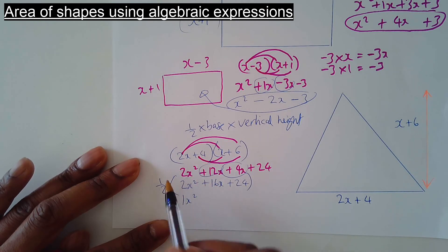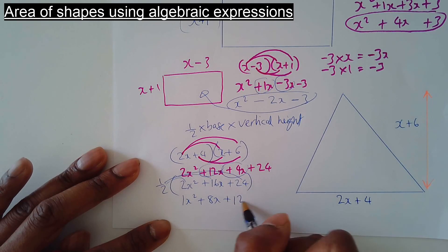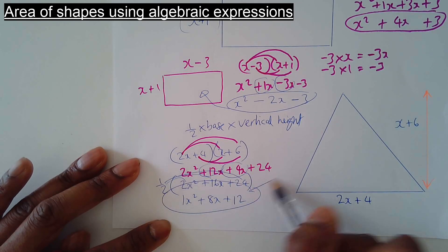Half times 16x is 8x. And then half times 24 is 12. That's the area of the shape.